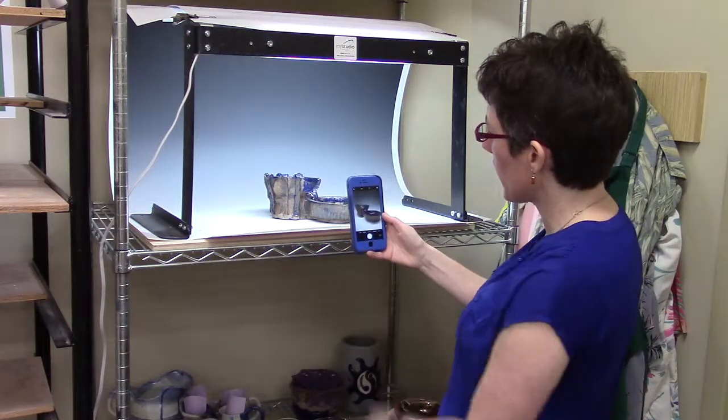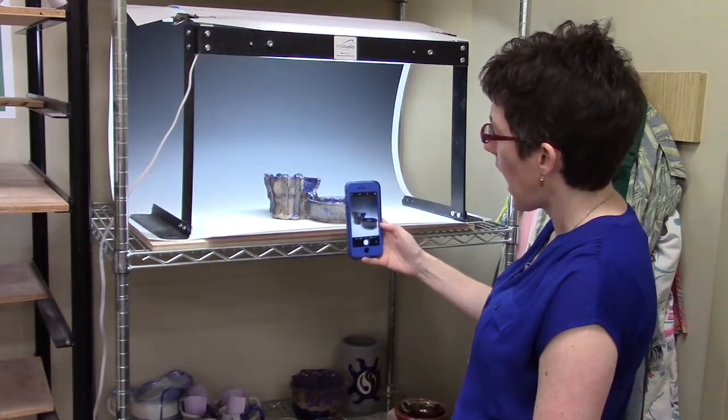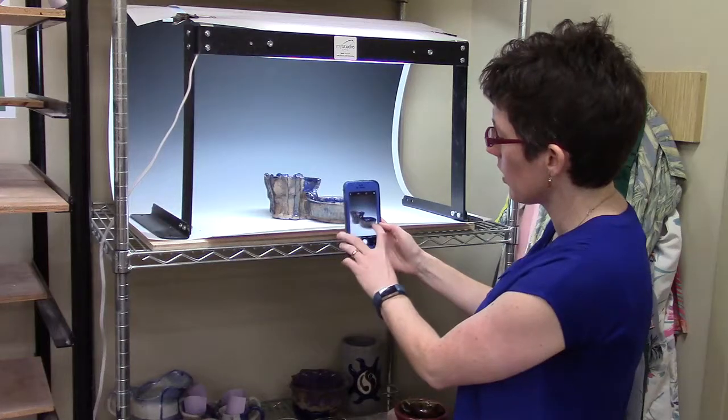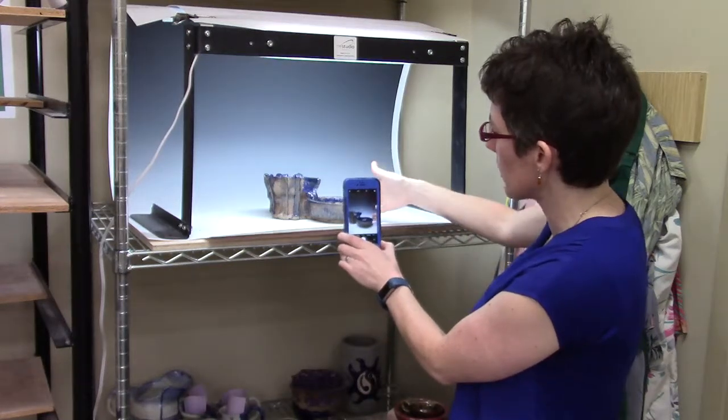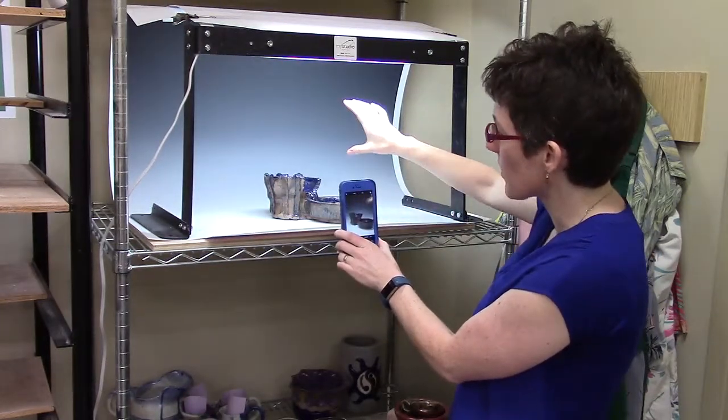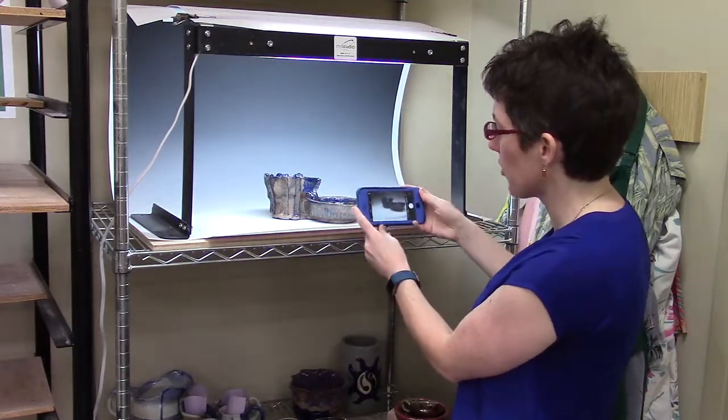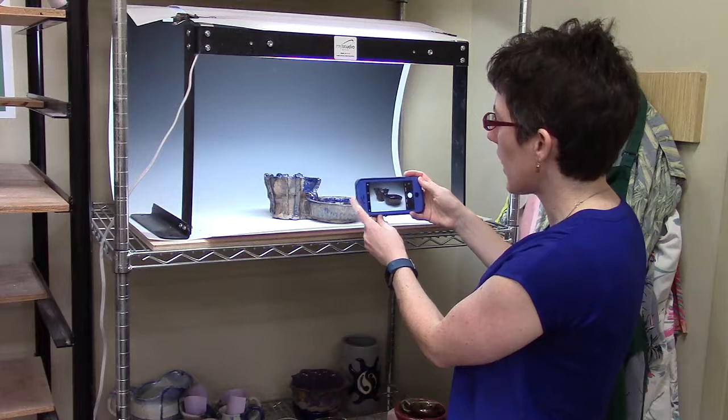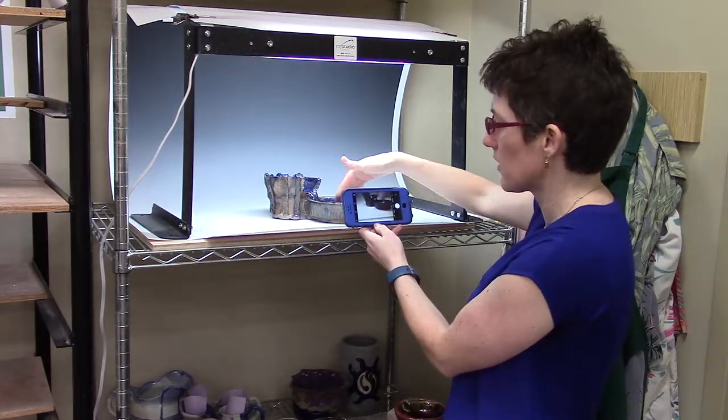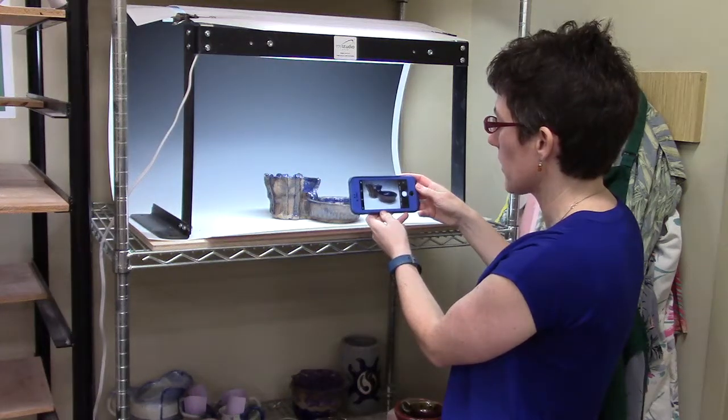If I line up my camera this way, I'm really cutting it close. I'm not able to see much. I've got a lot of space up above and not much space on either side. If I turn my camera this way, the piece fits in the frame a lot better without a lot of empty space around it.